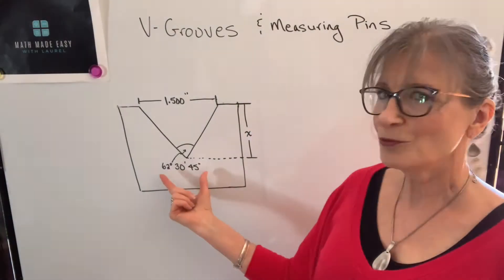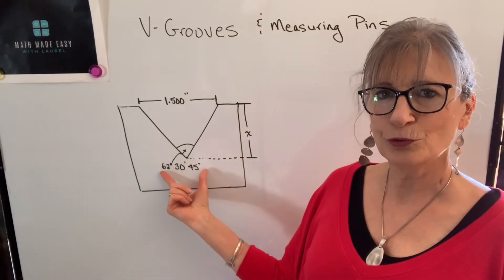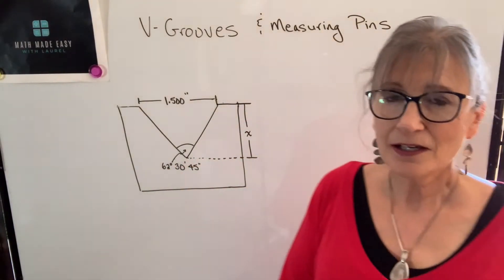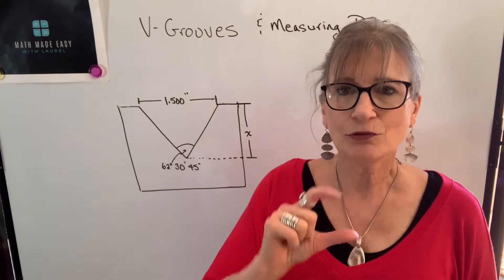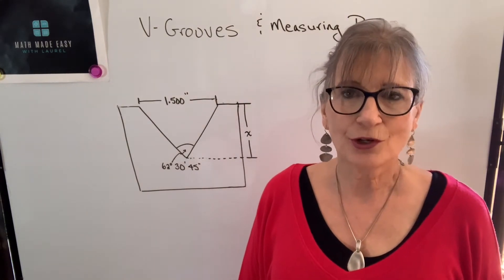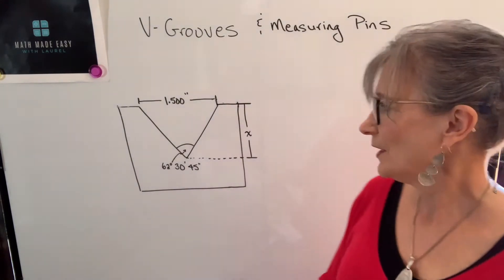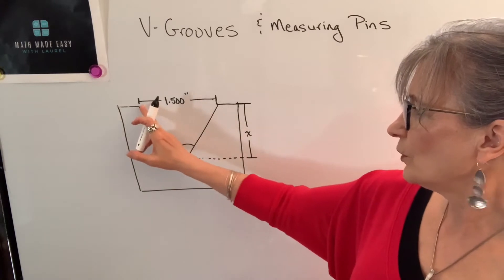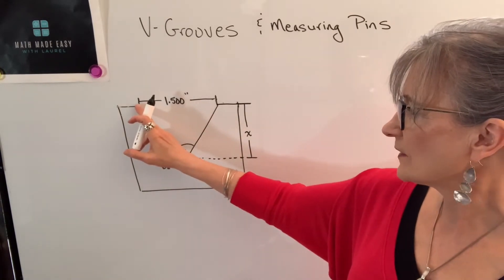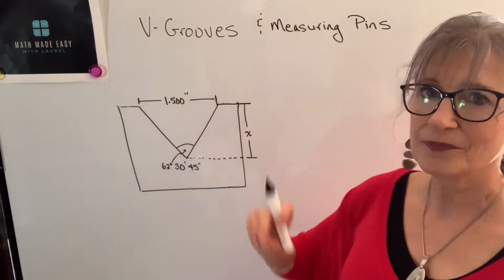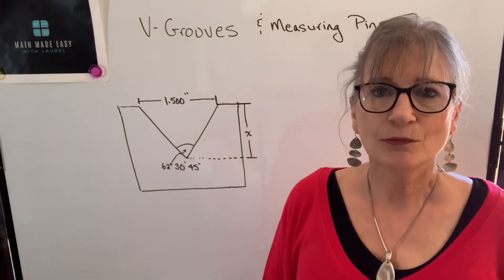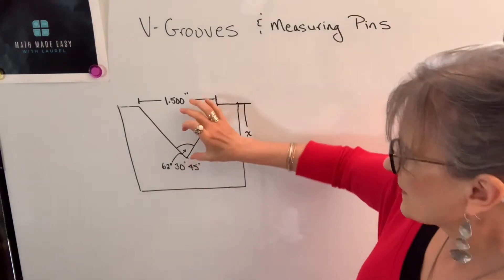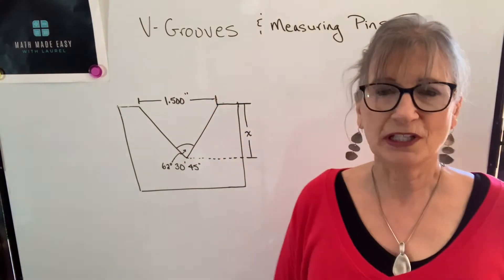So if we had the following V-groove and we wanted to calculate the height of that V-groove, we can do so using trigonometry. We know our angle and we know the distance at the opening. So with that information, we're going to calculate what this height of that V-groove should be.